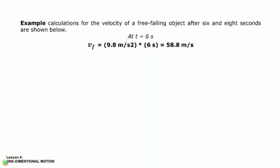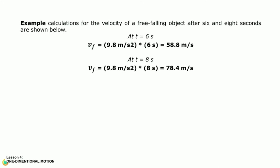Let's have an example. Calculations for the velocity of a free falling object after 6 and 8 seconds are shown below. At t equals 6 seconds, V sub f equals 9.8 meters per second squared times 6 seconds, giving a final velocity of 58.8 meters per second. At t equals 8 seconds, V sub f equals 9.8 meters per second squared times 8 seconds, giving a final velocity of 78.4 meters per second.